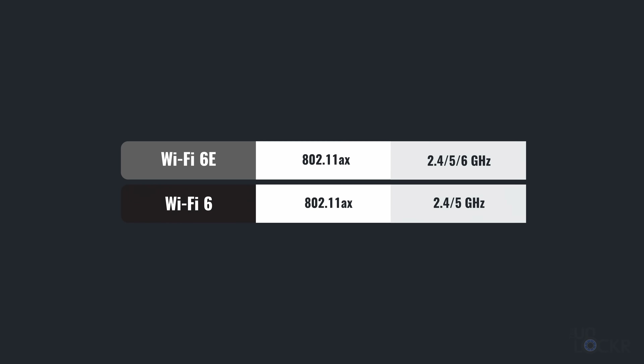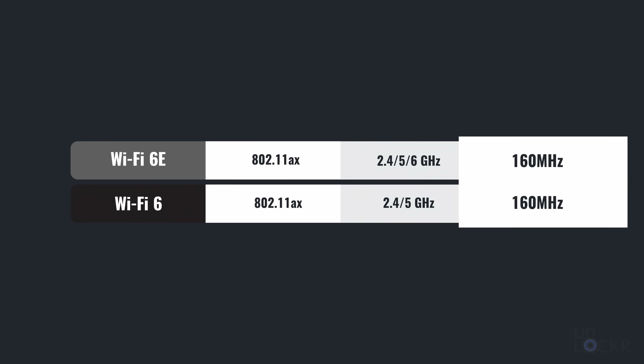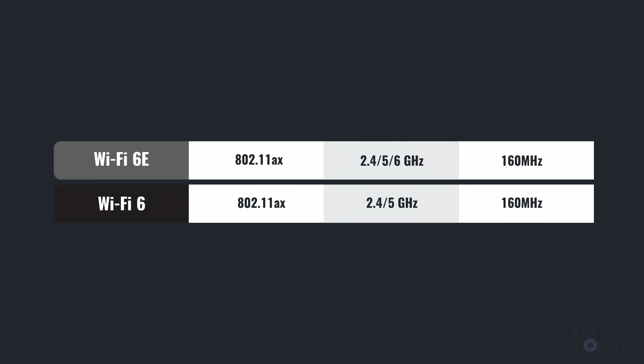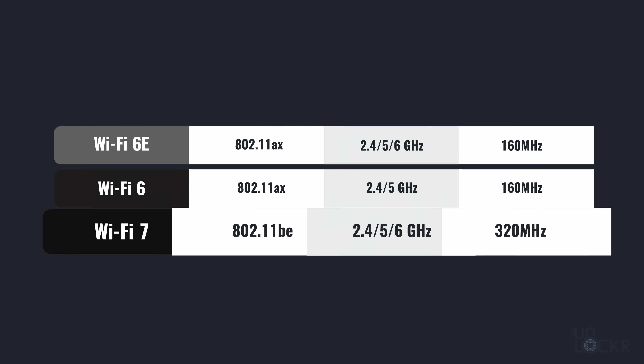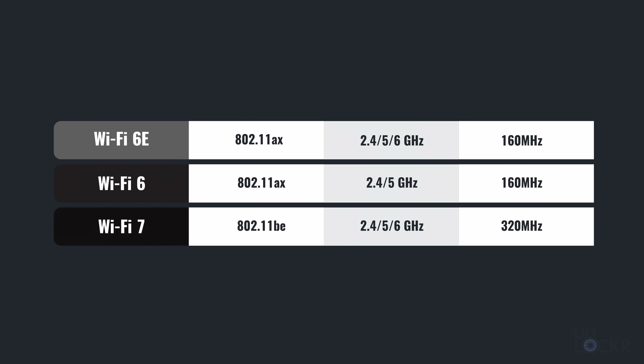Wi-Fi 7 also has the 6 GHz band from 6E, but within 6E the widest channel supported was 160 MHz. In Wi-Fi 7, that is doubled to 320 MHz. The larger the channel, the more data it can transmit at a time, so more speed. All of that allows for more speed, lower latency, and better reliability.